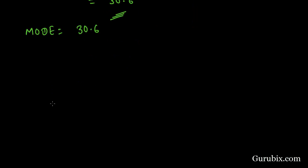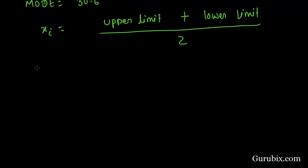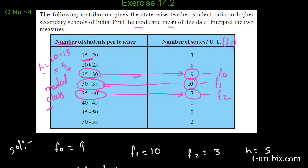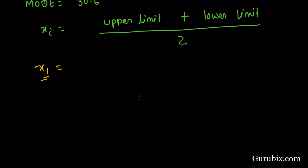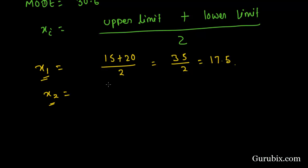Now we have to find mean. For calculating mean, we have to find Xi. Xi is equal to the upper limit of the interval plus the lower limit of that interval, divided by 2. So X1, which is the Xi of the first class interval 15 to 20, equals 15 plus 20 upon 2, equals 35 upon 2, equals 17.5. X2 is Xi of the second interval 20 to 25, so 20 plus 25 upon 2 equals 22.5.